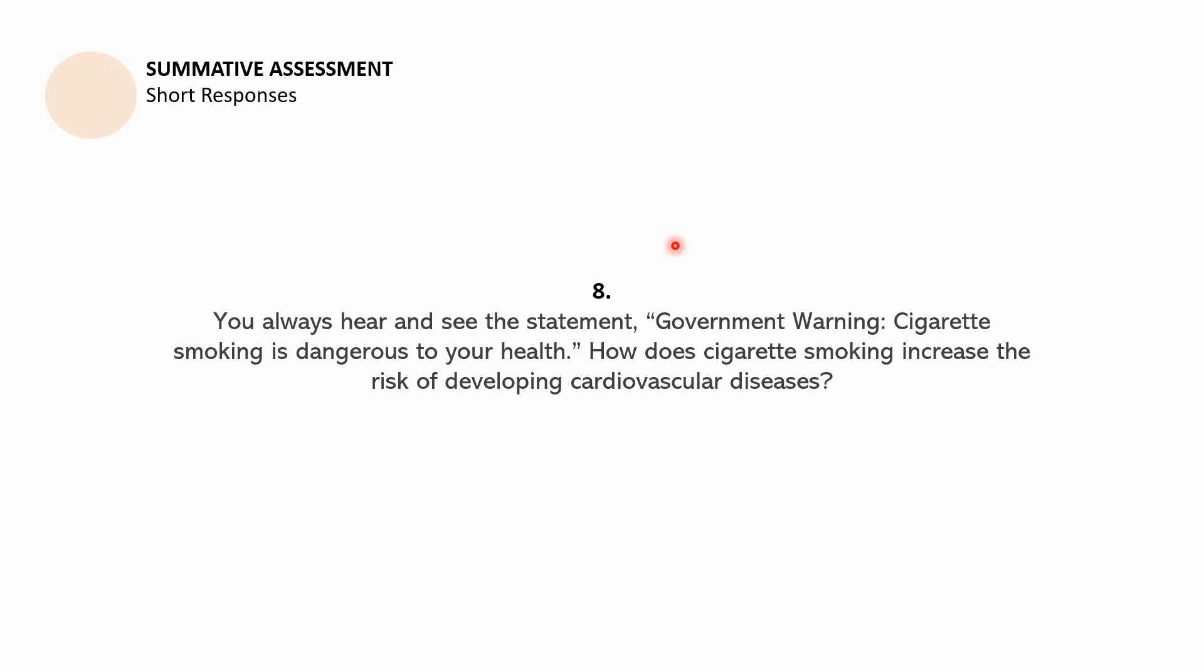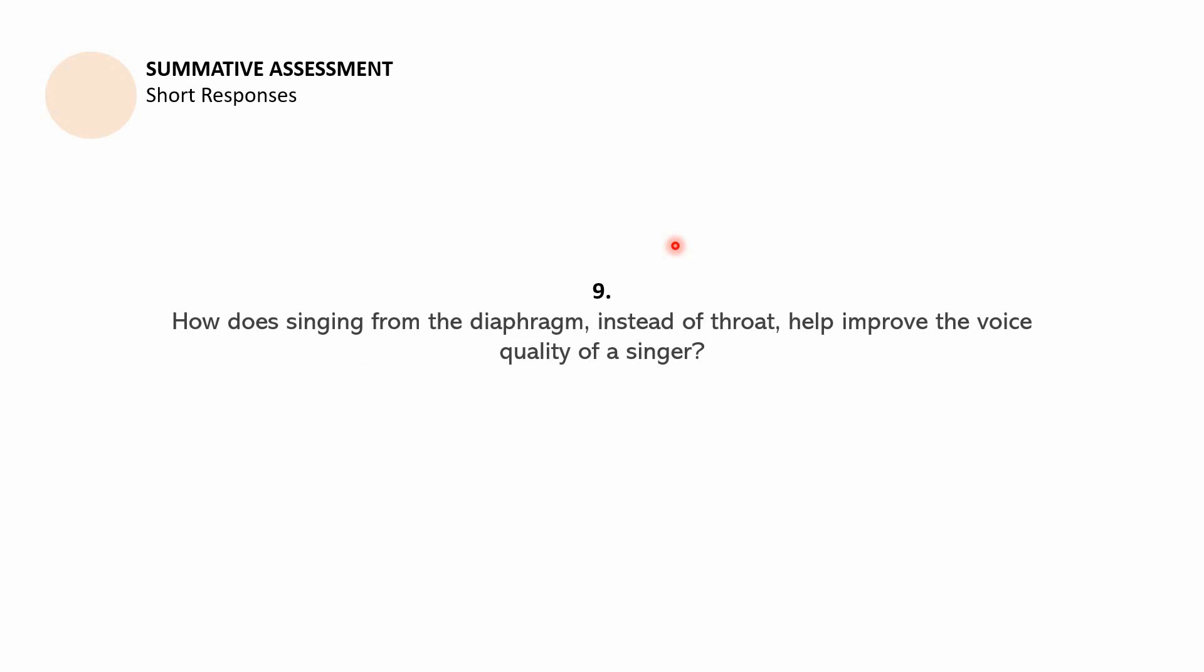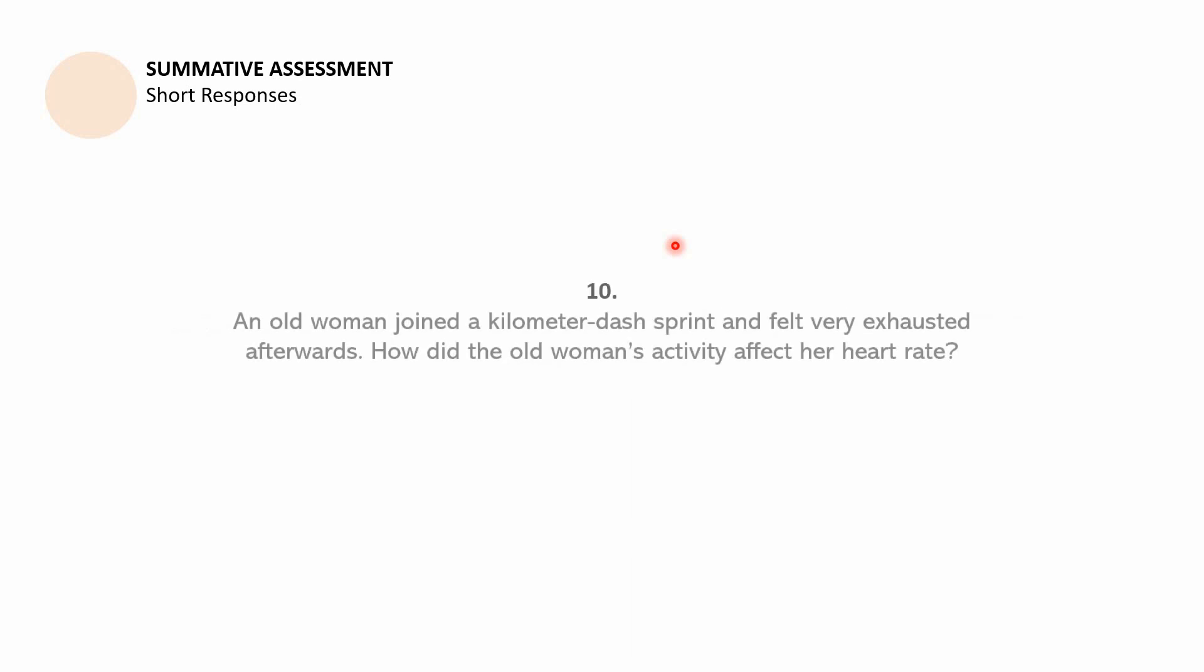Question number eight: you always hear and see the statement, government warning, cigarette smoking is dangerous to your health. How does cigarette smoking increase the risk of developing cardiovascular diseases? Question number nine: how does singing from the diaphragm instead of throat help improve the voice quality of a singer? Question number ten: an old woman joined a kilometer dash sprint and felt very exhausted afterwards. How did the woman's activity affect her heart rate?